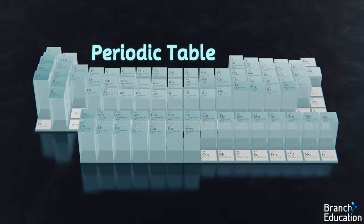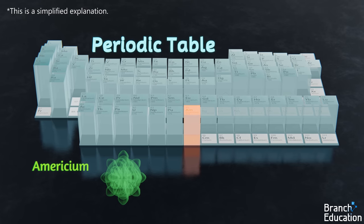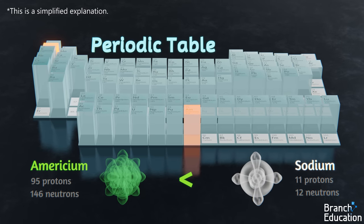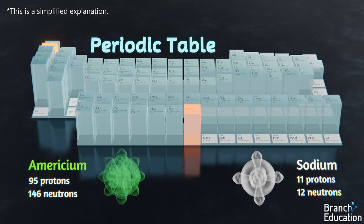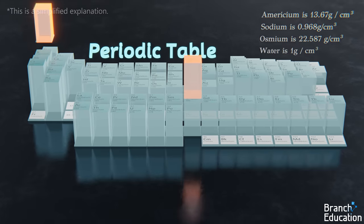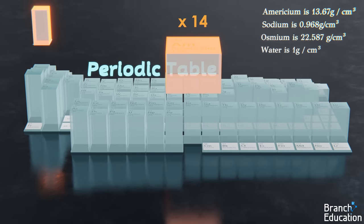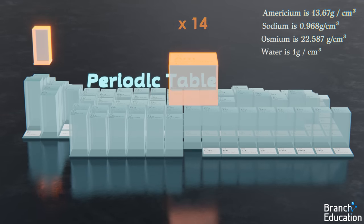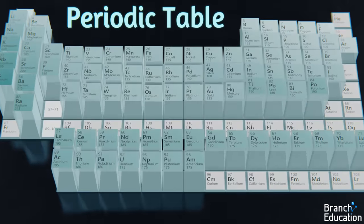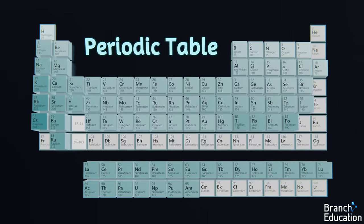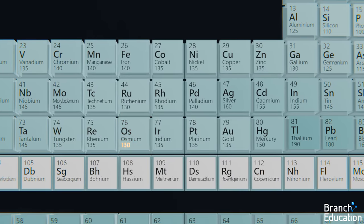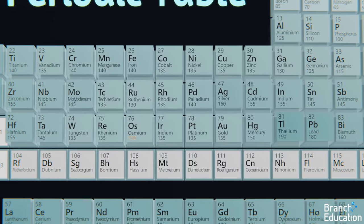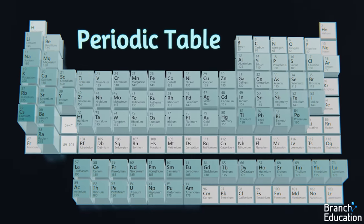One interesting note is the americium-241 is slightly smaller than sodium, but has almost 11 times the number of protons and neutrons. And due to this, americium is 14 times the density of sodium. This trend in density applies to many other elements as well. In fact, here's osmium. It has a rather small atomic radius and is the densest of all the naturally occurring elements.